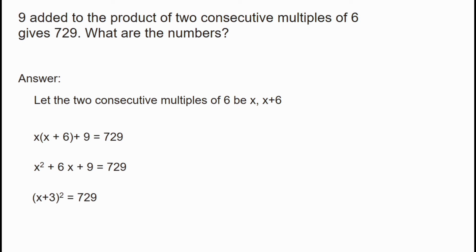The square root of 729 is 27. Taking the square root of both sides, x plus 3 equals plus 27 or minus 27.